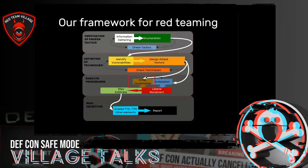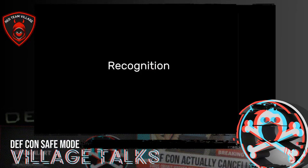We want to share this small framework we developed just to have an order in what we do during red team exercises. I am not going to cover every module, just some high level about information gathering and enumeration, and more on initial compromise, of course. So let's talk about reconnaissance, and especially about OSINT.